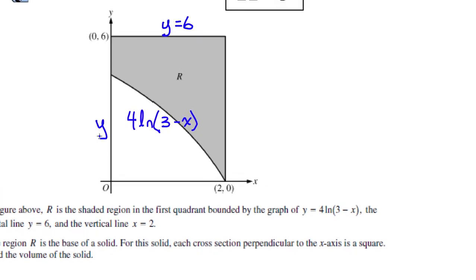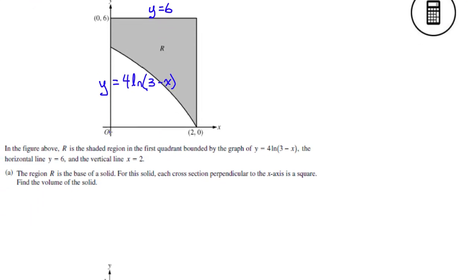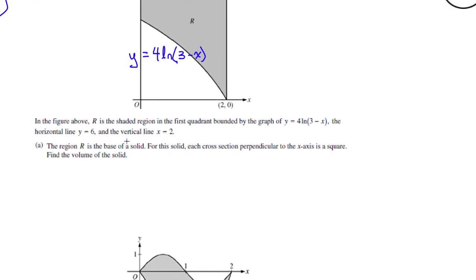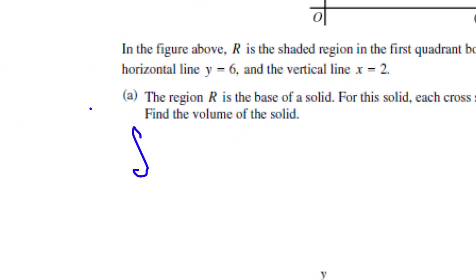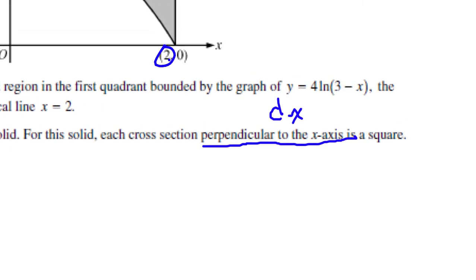We're going to have to do top minus bottom. The region R is the base of the solid, and for this solid, each cross-section is perpendicular to the x-axis. Whenever I see perpendicular to the x-axis, I automatically think: I'm doing dx. Everything is going to have an x instead of a y, and it's a square. So I need to find the volume of that solid. It's going to be an integral from 0 to 2.